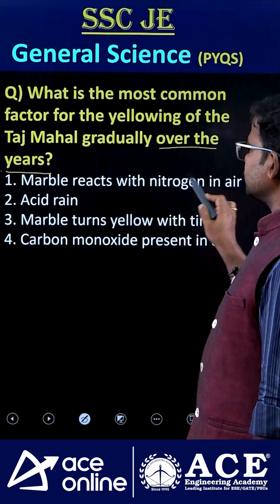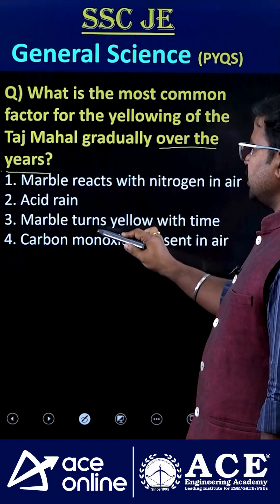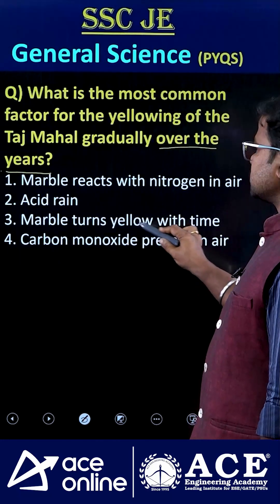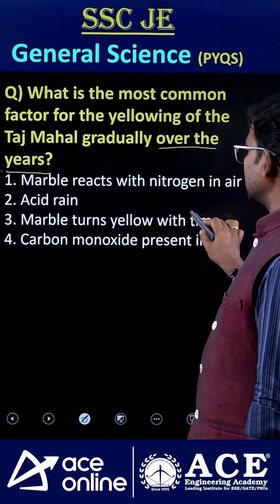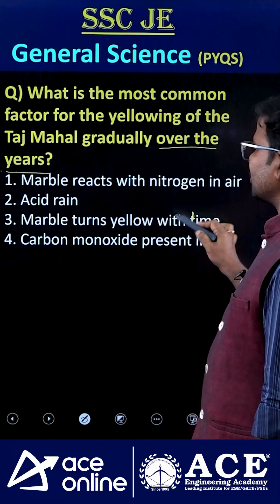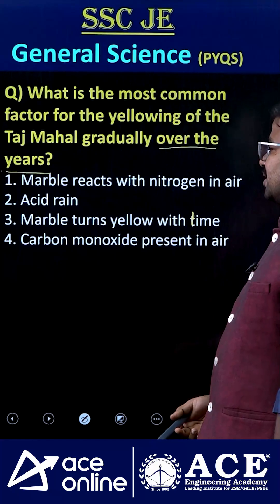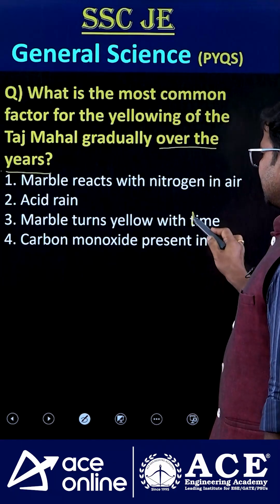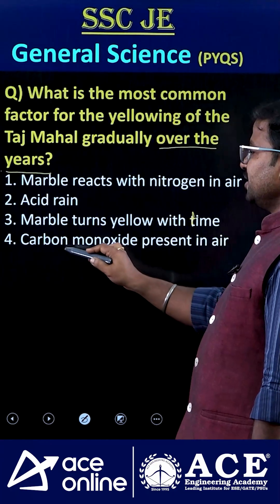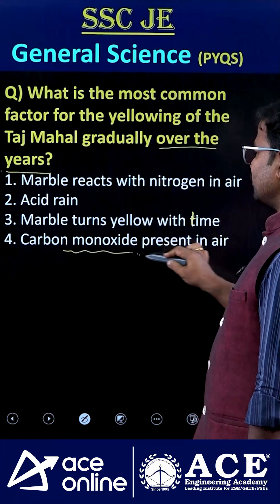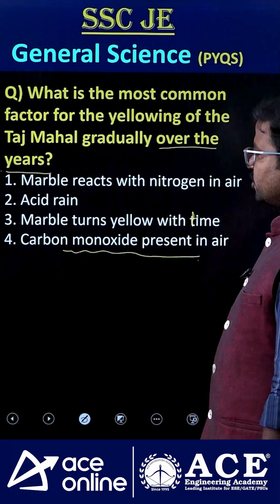The options are: marble reacts with nitrogen in air; acid rain; marble turns yellow over time; and carbon monoxide present in air. So which is the correct one?